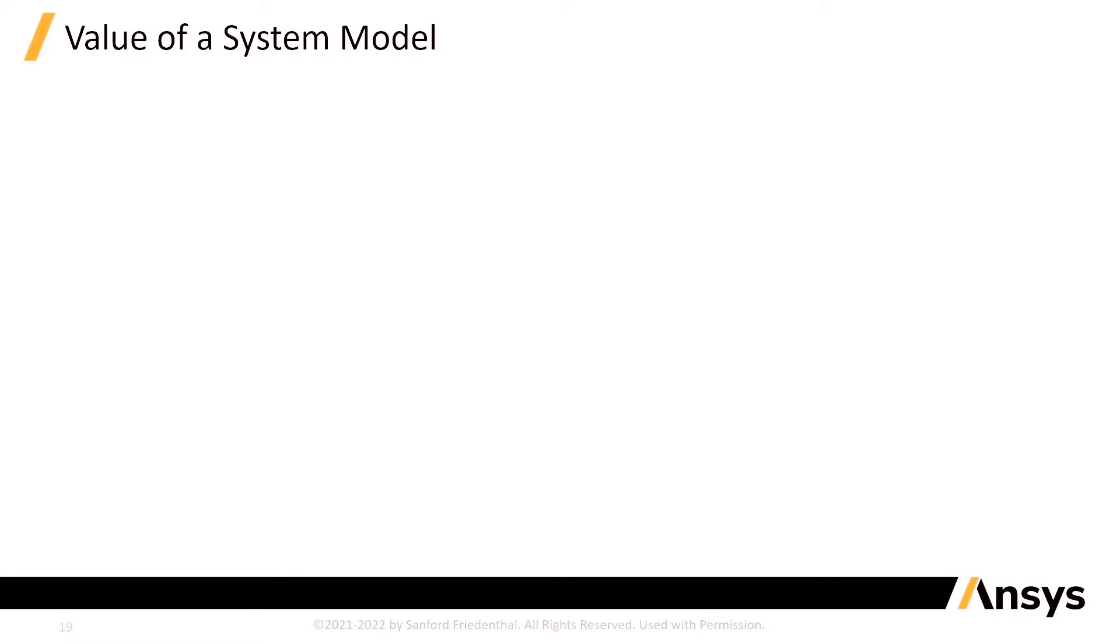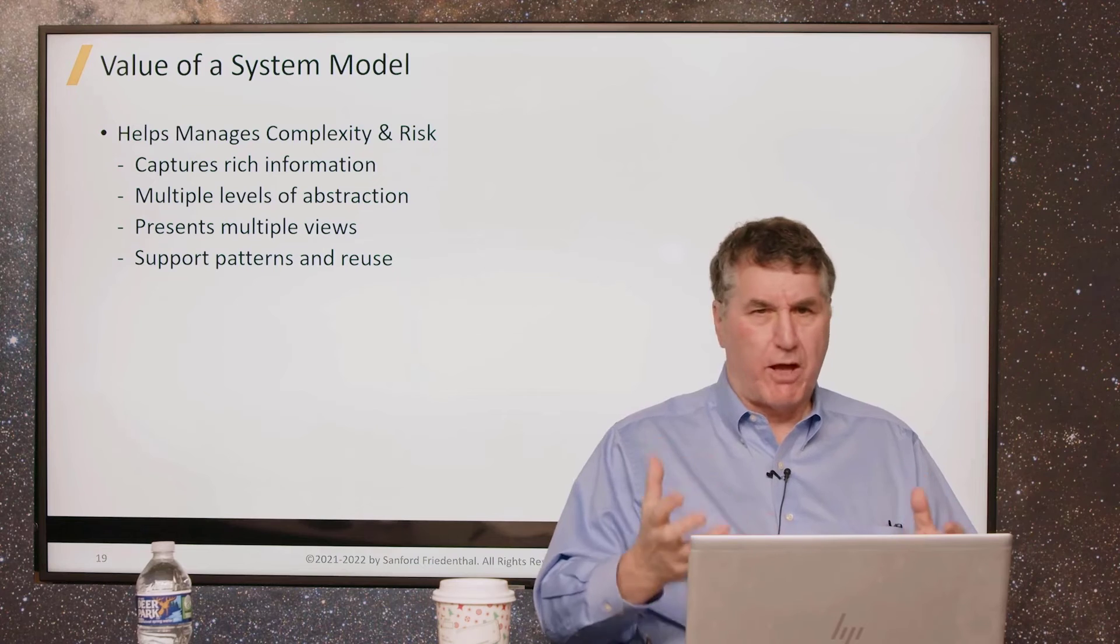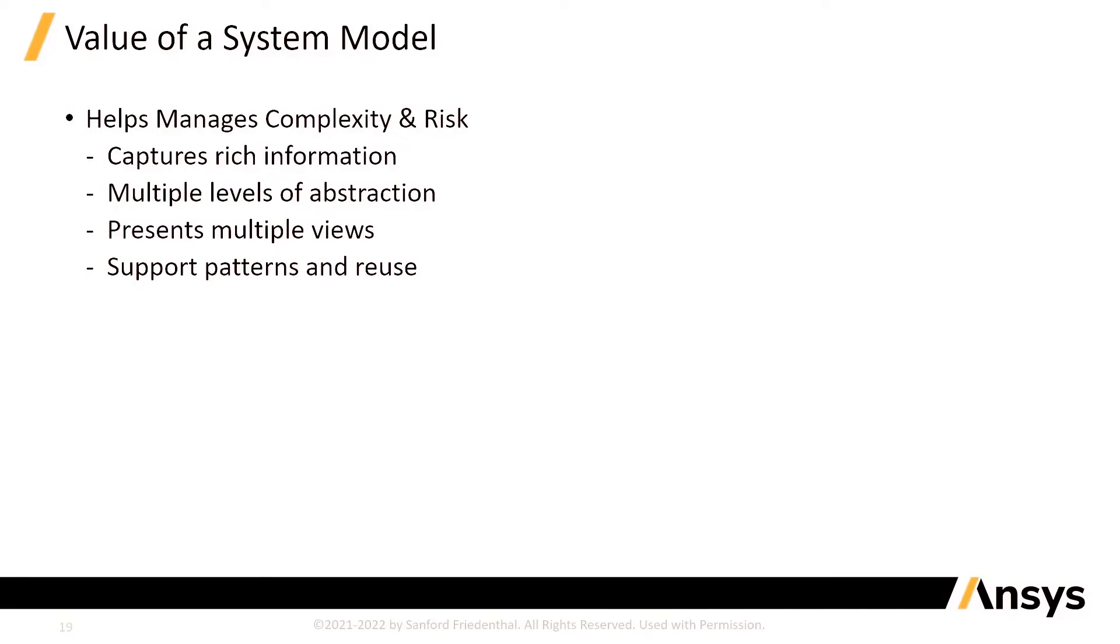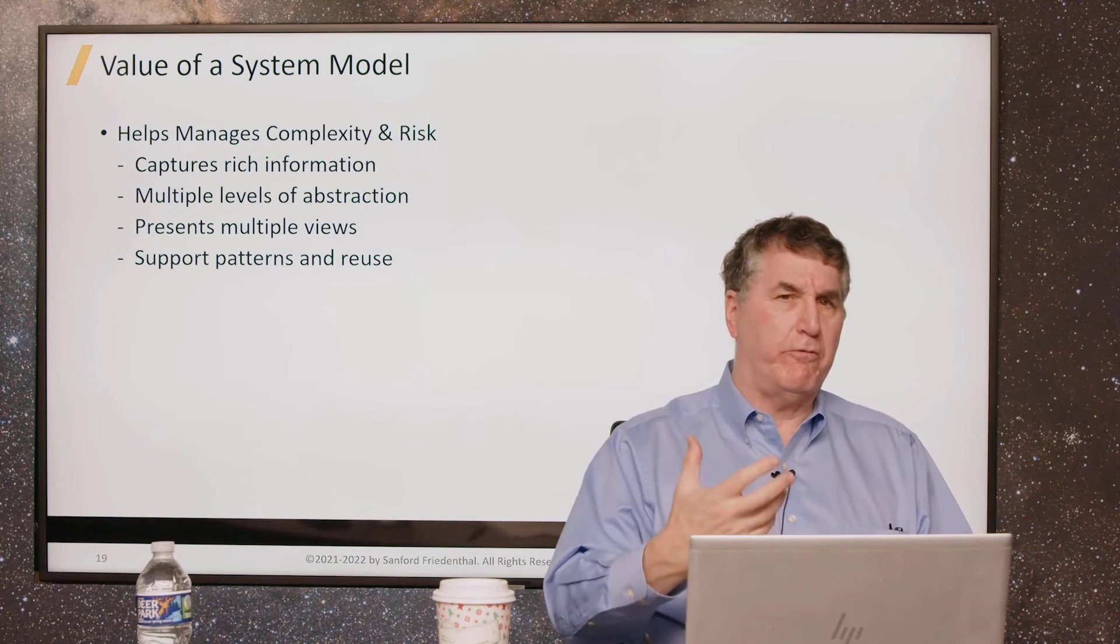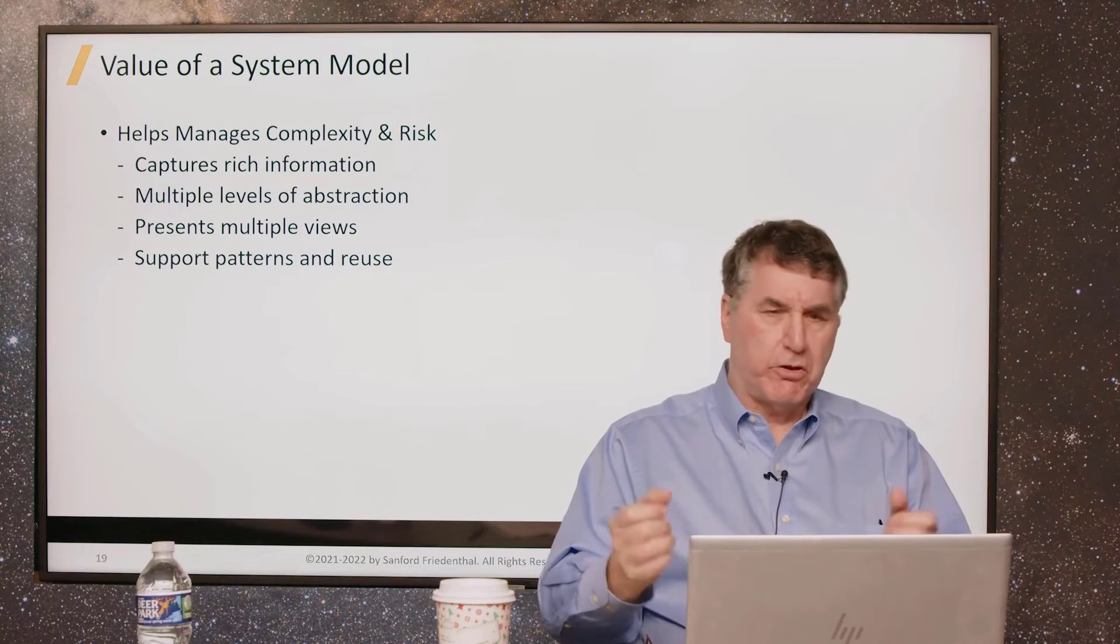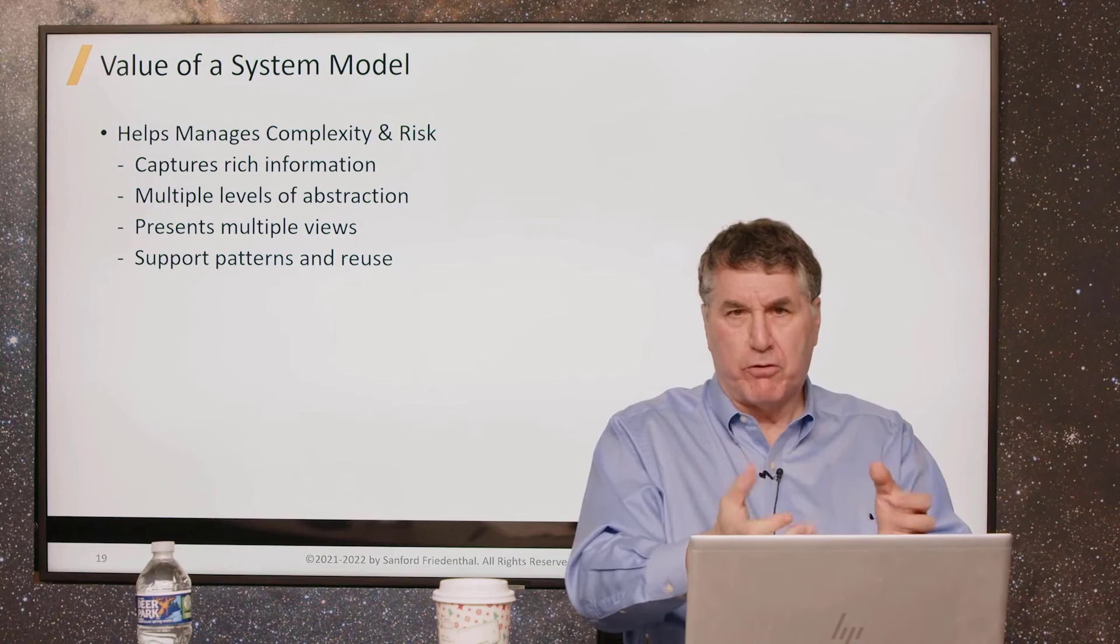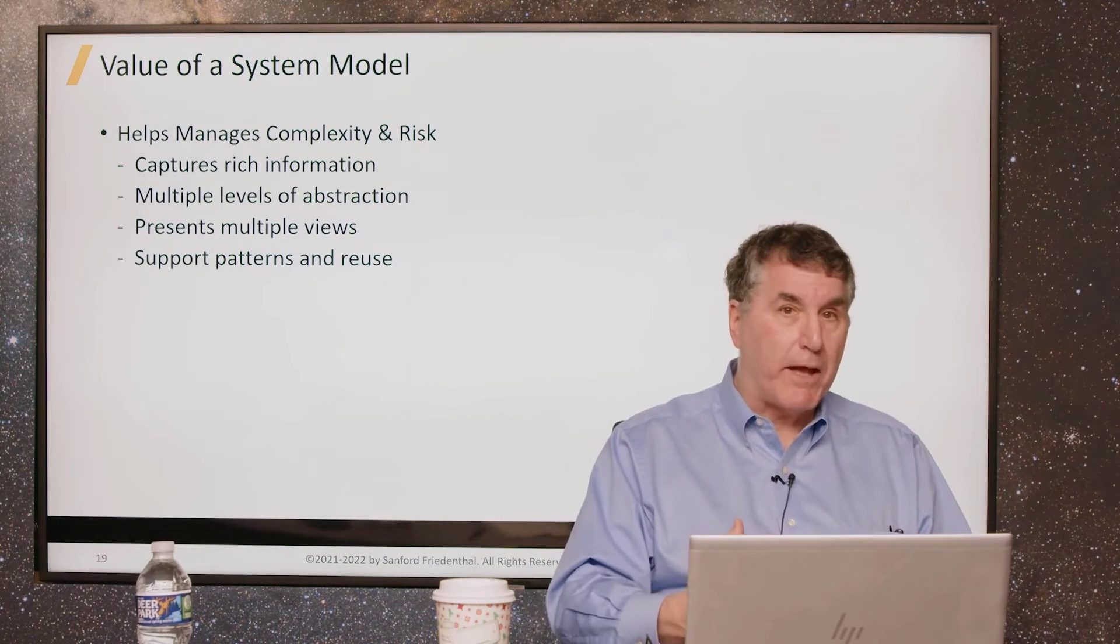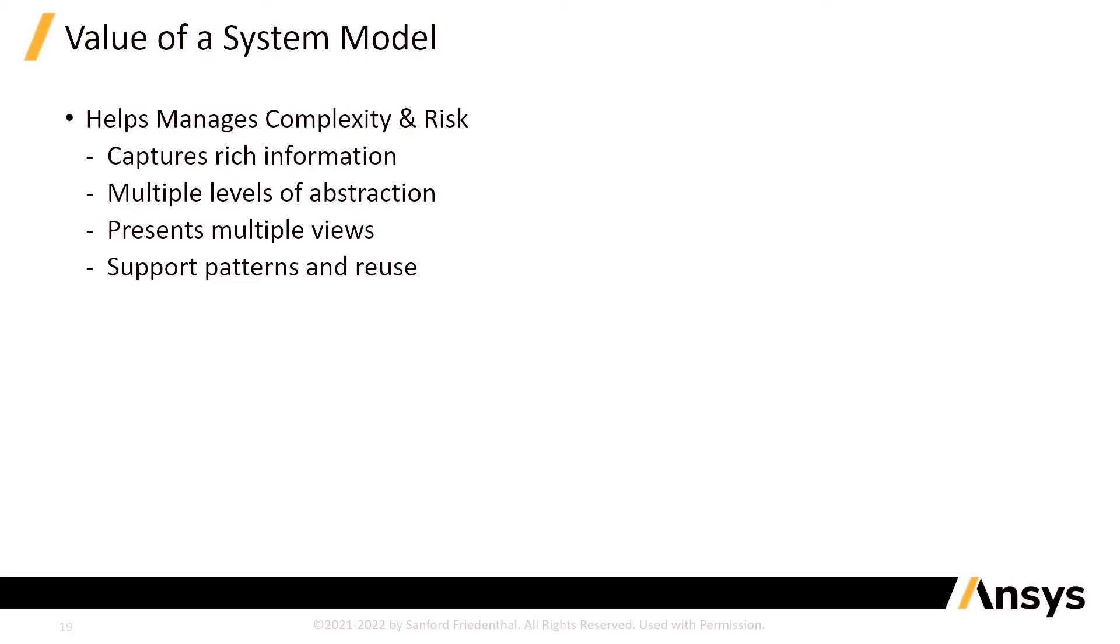Let's talk about the value of a system model and maybe elaborate on what a system model is a little bit more. First of all, this system model capturing all these logical relationships between the different elements helps us manage complexity and risk. It captures a very rich set of information, which we'll begin to illustrate. It can encompass many different levels of abstraction while still being in a single unified model. Similarly, you can present multiple views of your system from this one model. You can look at it from a functional perspective or a physical perspective or a requirements perspective. And it does enable the use of patterns and promotes reuse if used properly.